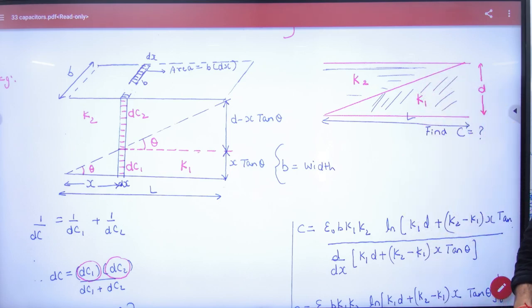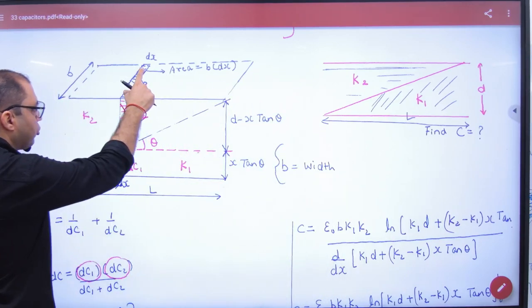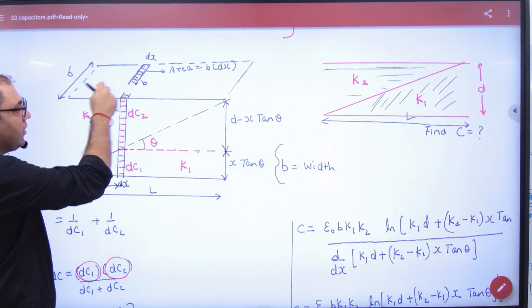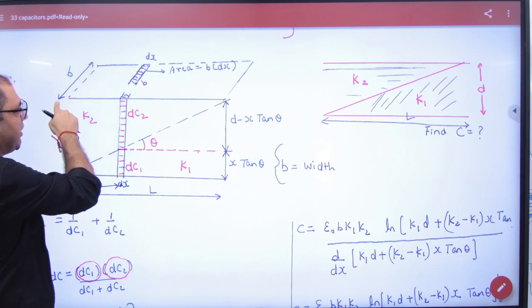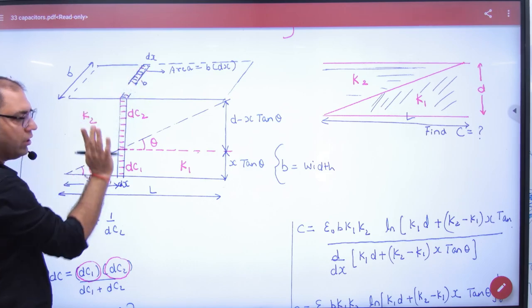Now there is a problem in diagonal. If it is straight, then I will tell you that it is a series. Diagonal is the problem in diagonal. The problem is that if you take a small area, like this plate of capacitor, this is B width, and I have taken a small element of dx, then it will be B into dx.